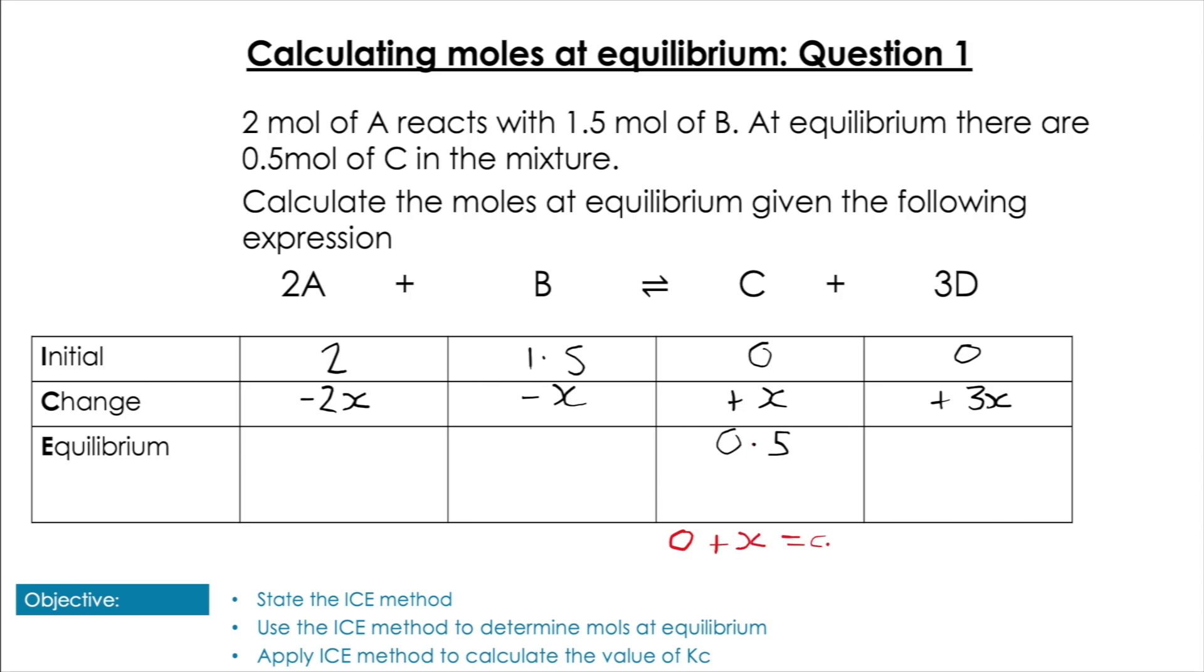Solving for x using C: 0 + x = 0.5, so x = 0.5. Plugging this in: for A, 2 - 2(0.5) = 1 mole. For B, 1.5 - 0.5 = 1 mole. For D, 0 + 3(0.5) = 1.5 moles. So at equilibrium we have 1, 1, 0.5, and 1.5 moles, and we don't need to calculate Kc.